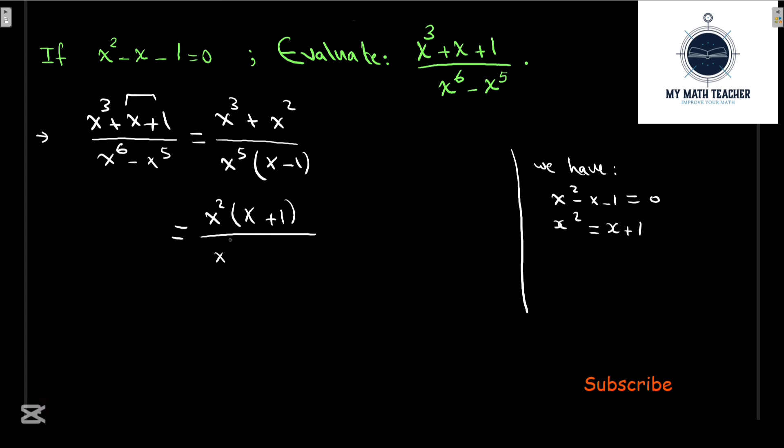Simplifying x² divided by x⁵, we get (x + 1)/(x³(x - 1)).